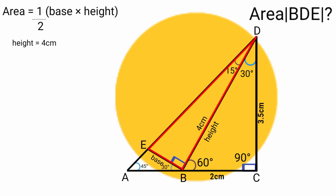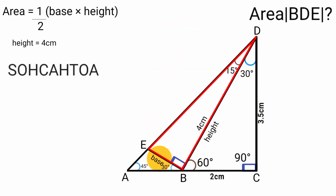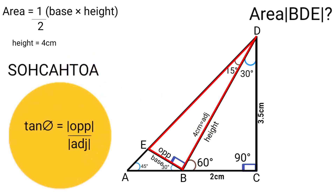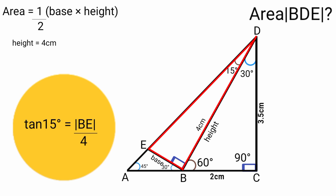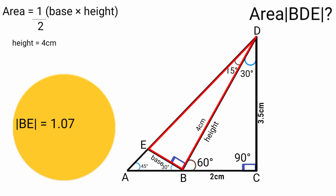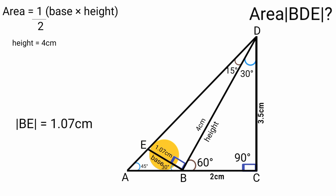Coming back to triangle BDE, to find side BE we use SOH-CAH-TOA. From angle 15 degrees, side BE is opposite and side 4 cm is adjacent. So tan 15° = BE over 4. Making BE the subject: BE = tan 15° × 4. Tan 15° times 4 equals approximately 1.07, so BE = 1.07 centimeters.